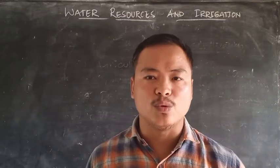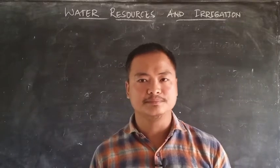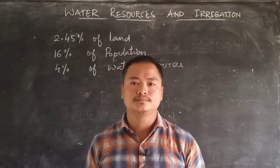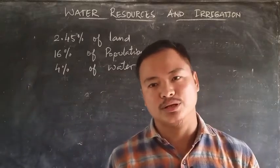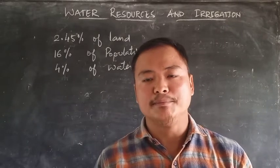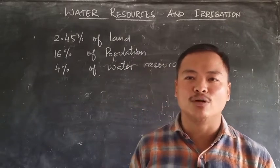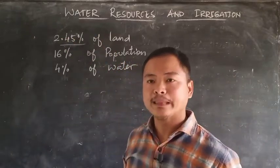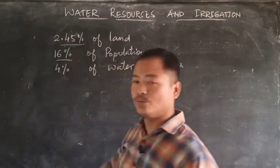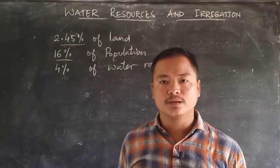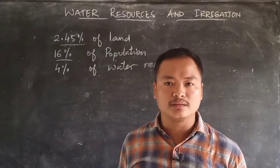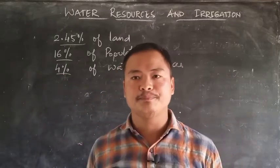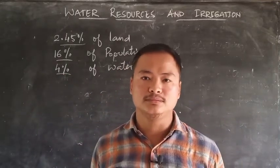So if we discuss about the water resources in India, let us see. India is home to 16 percent of the world's population, in a very small area of only 2.45 percent of the land. So such a large populated country, yet the water level is only 4 percent of the world's resources.